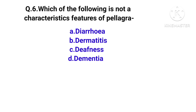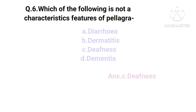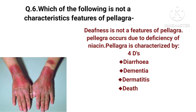Which of the following is not a characteristic feature of pellagra? The options are diarrhea, glossitis, giddiness, or dementia. The right answer is option C — giddiness is not a feature of pellagra. Pellagra occurs due to deficiency of niacin and is characterized by the 4 Ds: diarrhea, dementia, dermatitis, and death.